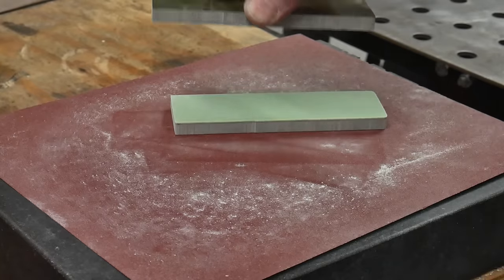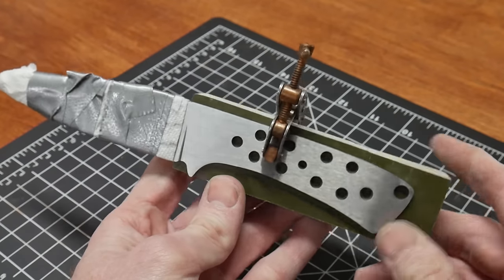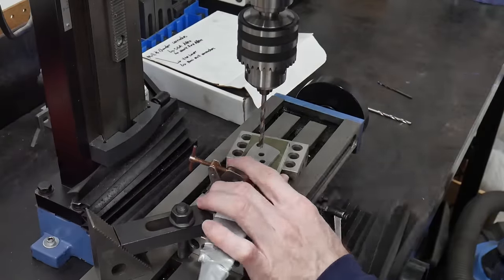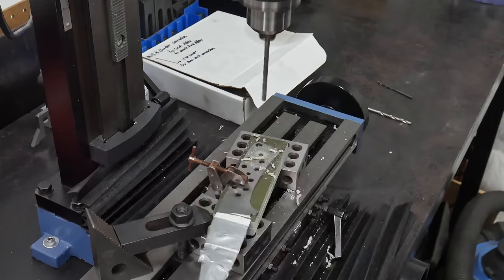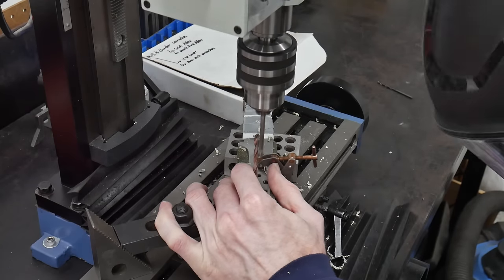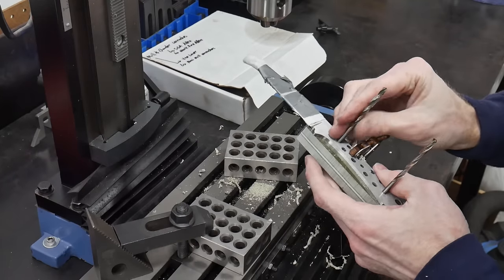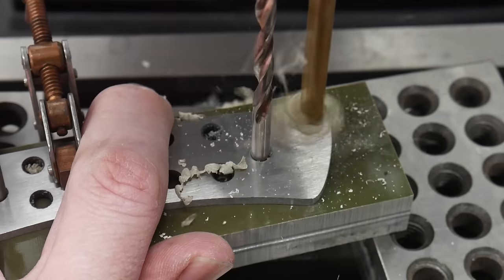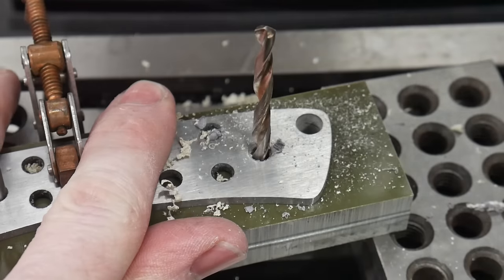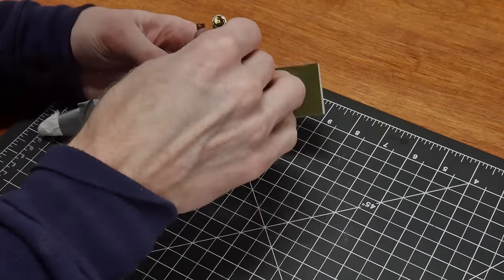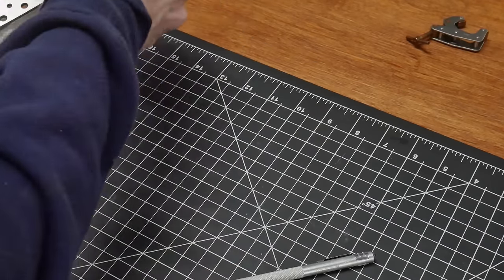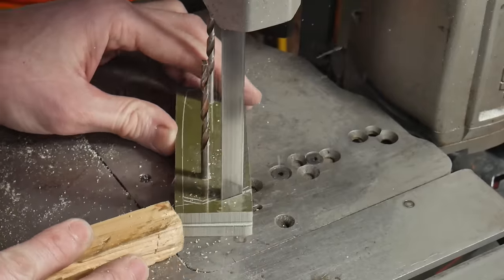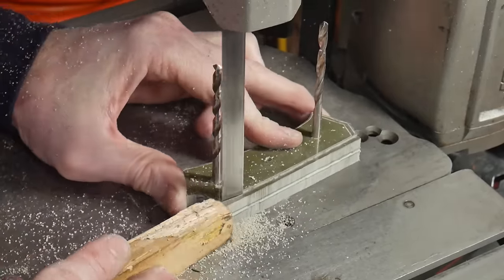Next we'll be drilling our holes in the handle scales. To make sure these holes line up with the holes in our tang, we clamp the knife to the handle scales to act as a drill guide. The number 13 holes are the first I drill to accommodate the Corby fasteners. After each hole is drilled, I put a drill bit shank into the hole before going on to the next one. This guarantees everything stays lined up during the drilling process. As a safety note, I'd recommend using a push stick when cutting with a bandsaw. It doesn't take much of a slip to cut your finger.